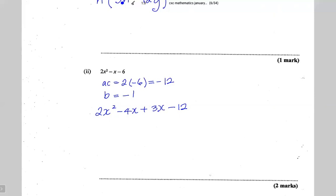Next I'm going to factorize by grouping. Looking at the first two terms, the HCF is 2x. 2x into 4x squared is 2x. The HCF of the right pair is 3. 3 into 3x is x.